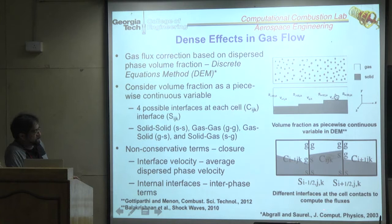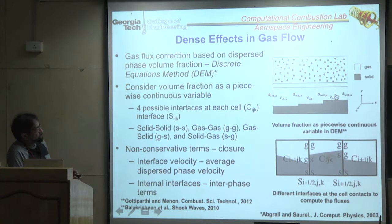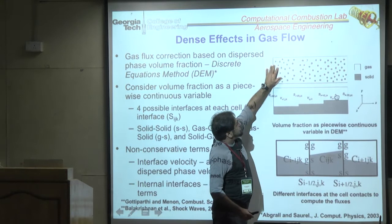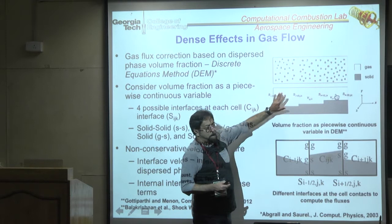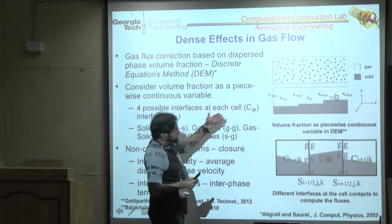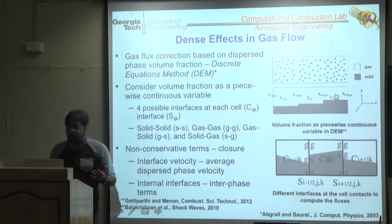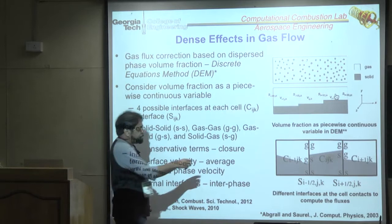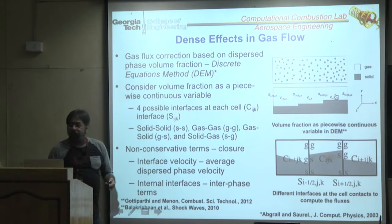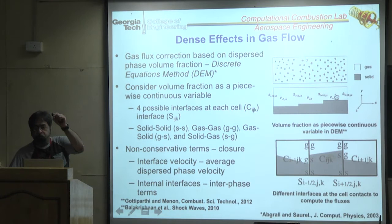In DEM: if a Lagrangian particle computation shows particles occupy 20% of a cell volume, the gas-phase fluxes in and out must be reduced accordingly. You cannot have 100% of the gas flowing through a cell because there is blockage — the gas flux must be reduced to reflect the particle-occupied volume.